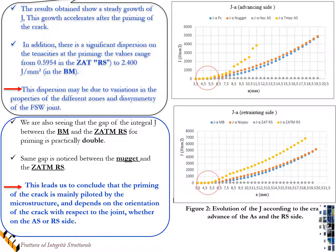Here the results obtained for G in the different zones at the advancing and retreating side. The result shows steady growth of G. This growth accelerates after the priming of the crack. In addition, there is a significant dispersion in the tenacities at priming. This dispersion may be due to the variation in the properties of the different zones and the asymmetry of the FSW joint. We can also see that the gap of the integral G between the base metal and ZTM-RS for priming is particularly double.